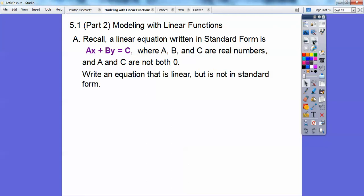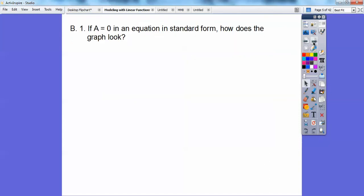Alright, so we're going to write an equation that is linear but not in standard form. Something like X equals 17Y, or Y equals negative 3X plus 5. It's not in standard form where we have the number X plus the number Y equals some number right here. We've got X's and Y's on both sides, so there's an example.